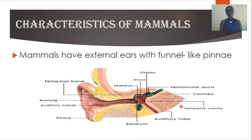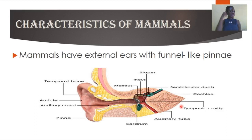Now we are going to look at characteristics of mammals. The first characteristic is that mammals have external ears with funnel-like pinna. For instance, I have a pair of ears, one on each side — this ear is outside, unlike the tongue which is inward. Our ears take the shape of a funnel; the external ear makes a funnel-like shape going down into the inner core, like a funnel in a lab.